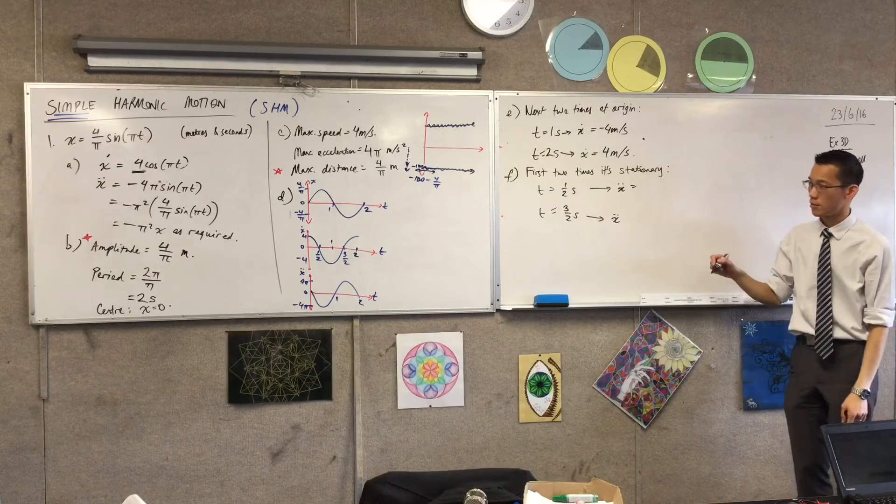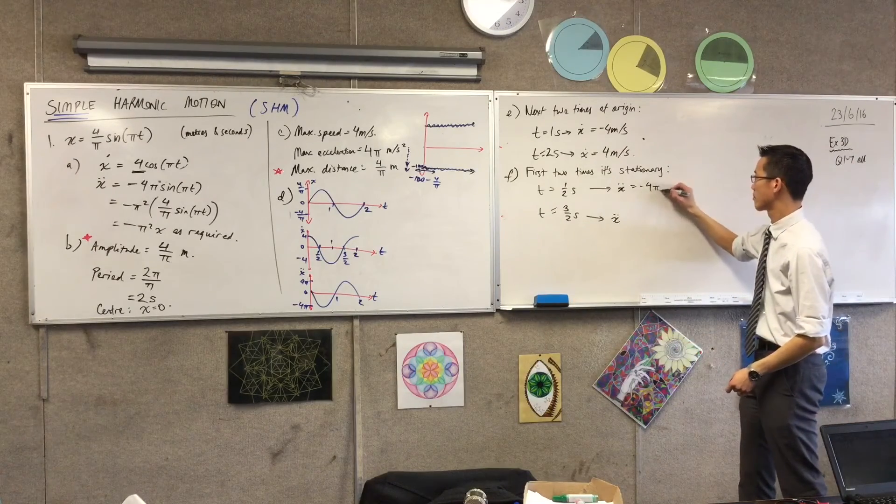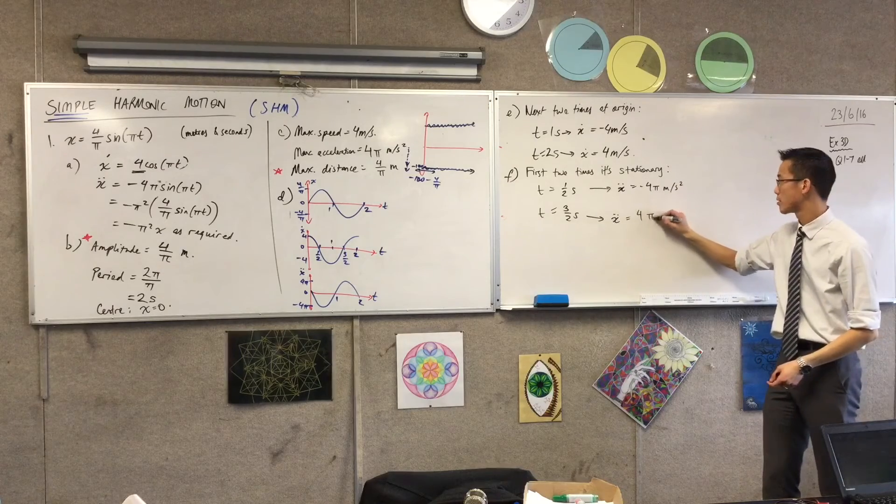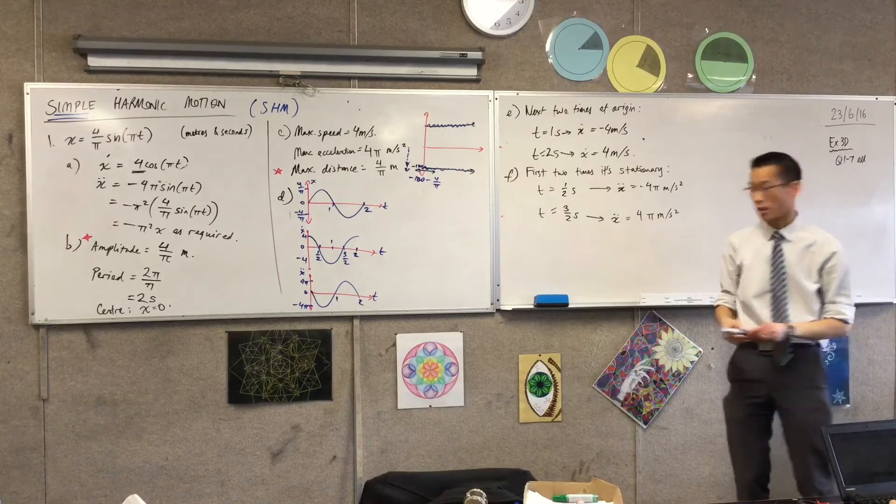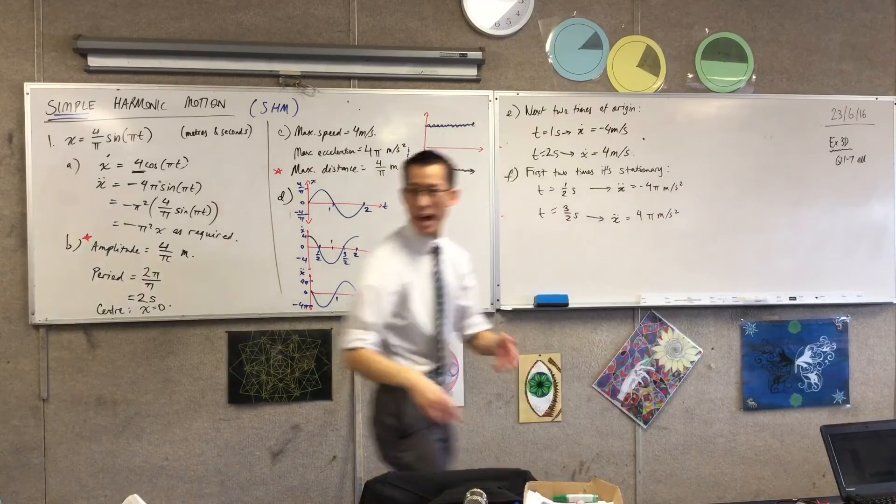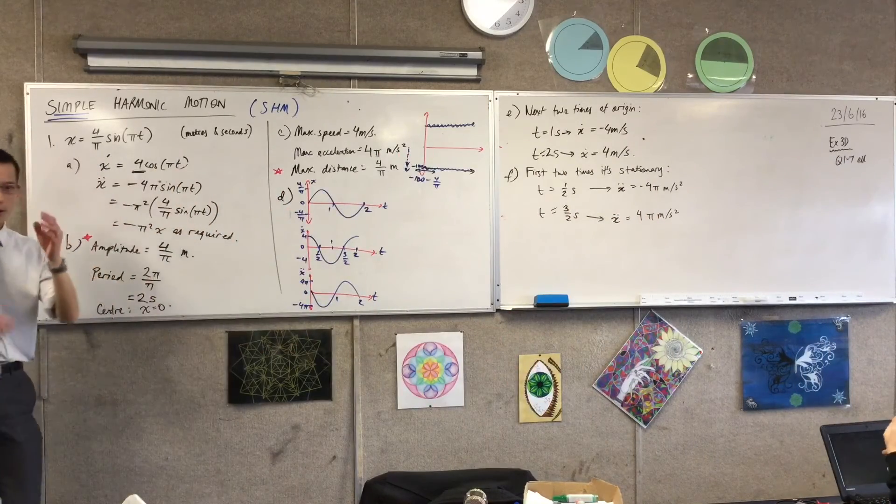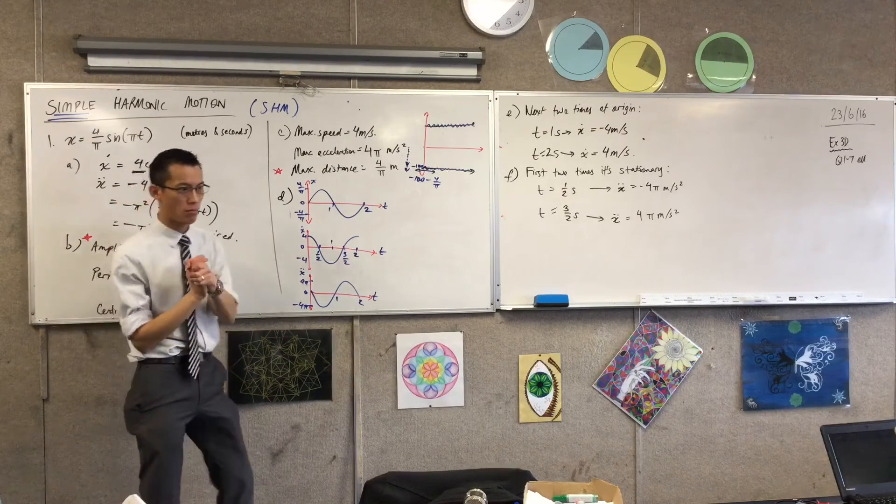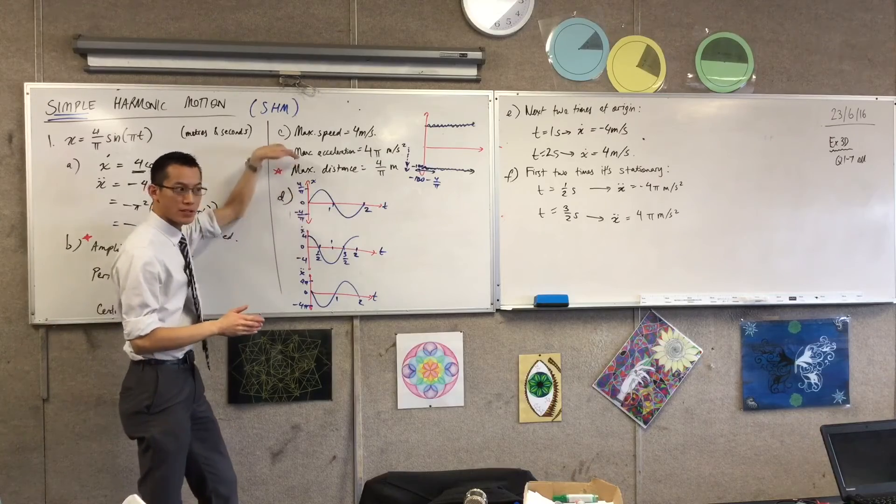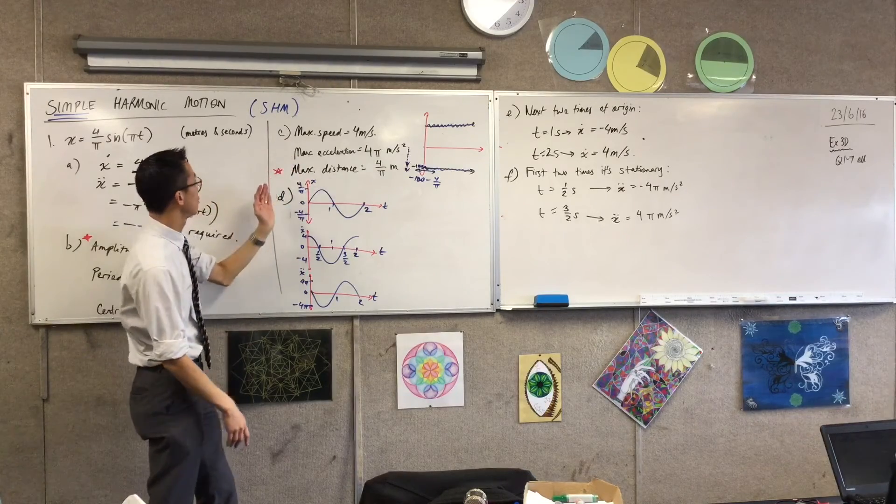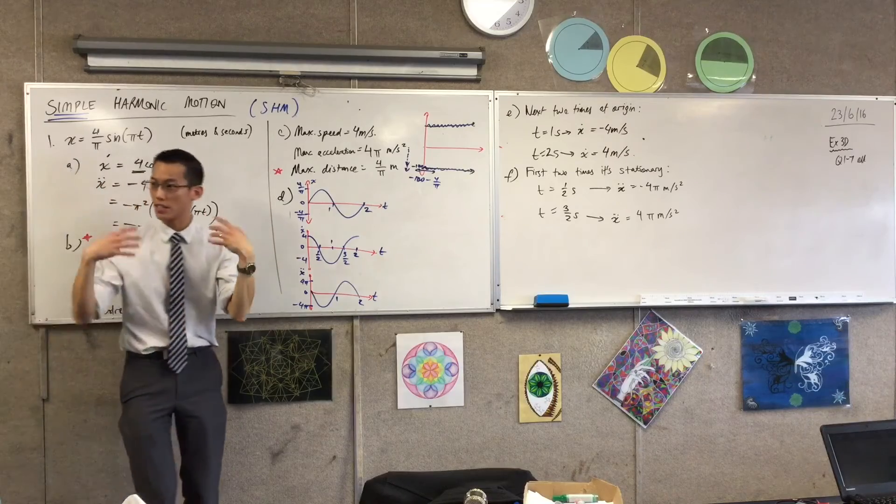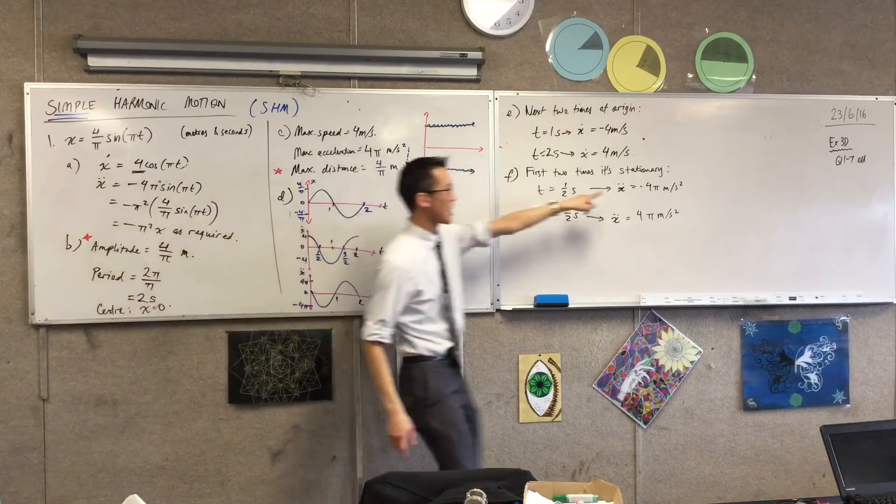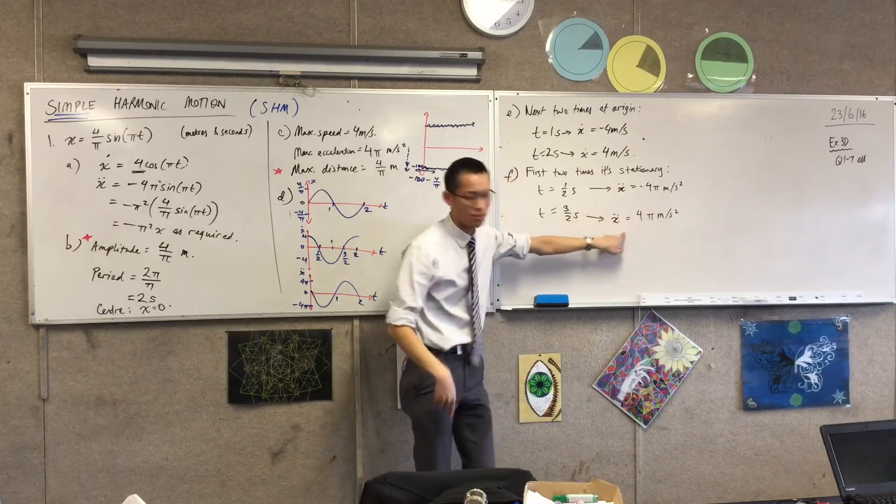At t equals a half, which way am I going? And here it's the positive case. A nice easy way you can confirm that is at t equals half a second, displacement wise, where are you? Where are you? Which side of the origin are you on? Above the... the positive side, then the acceleration has to be in the opposite direction, and vice versa.